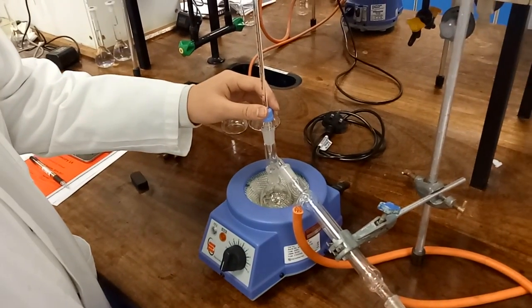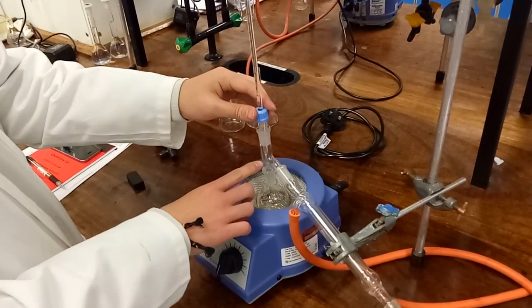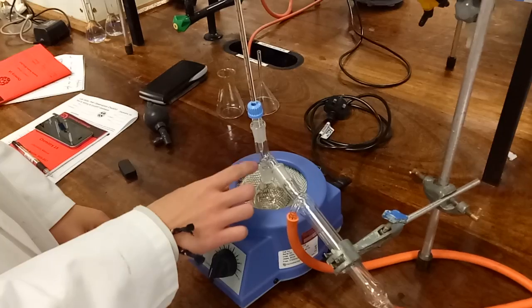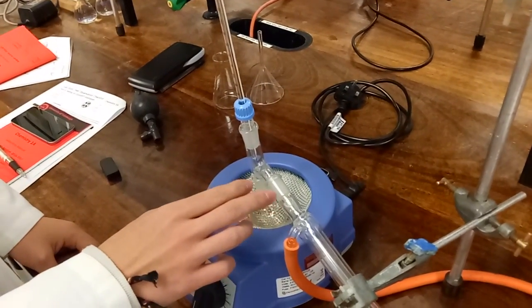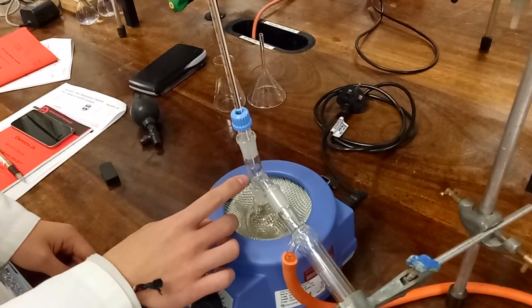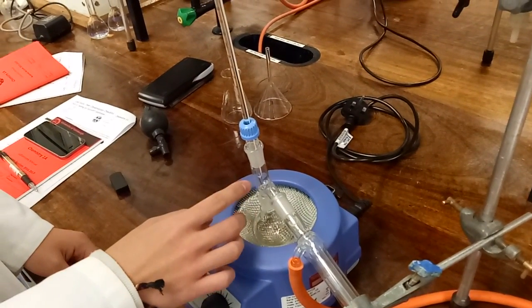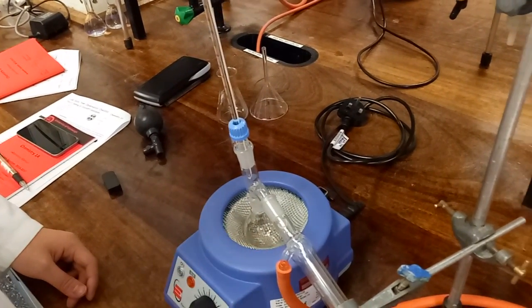The thermometer is held here at the joint between the flask and the condenser, because we want to measure the temperature of the gas as it goes into the condenser.